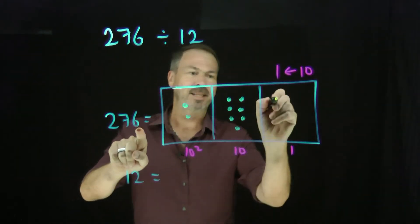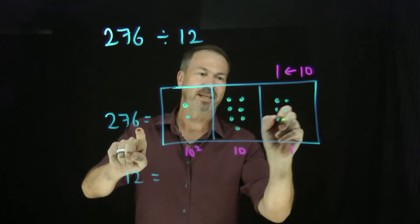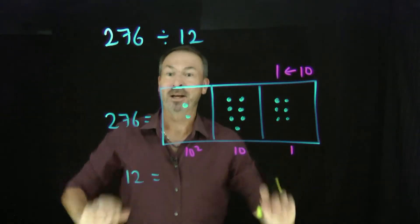One, two, three, four, five, six, seven. And six. One, two, three, four, five, six. Six ones. There's a picture of 276.